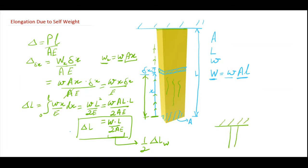So let's suppose that if this is a bar of same parameters L, cross section area A, and if there is a weight of W attached at the free end, then there will be the extension of W L by A E.